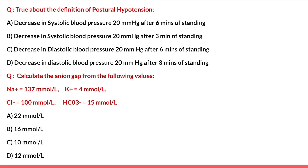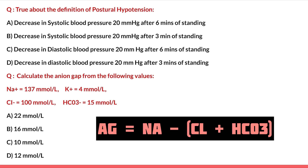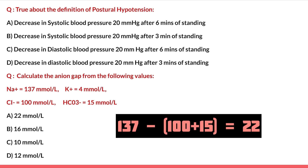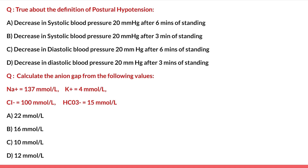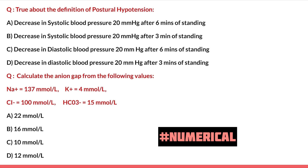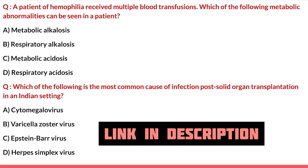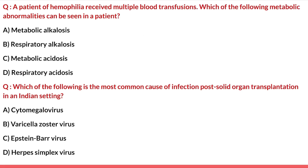Next question: calculate the anion gap from the given values of sodium, potassium, chloride, and bicarbonate. The formula for anion gap is: sodium minus (chloride plus bicarbonate). Putting in the values: 137 minus (100 plus 15) = 22. The answer is option A: 22. For a complete revision of acid-base disorders, a full video covering different mechanisms, compensation, causes, and anion gap questions is linked in the description or the 'i' button.